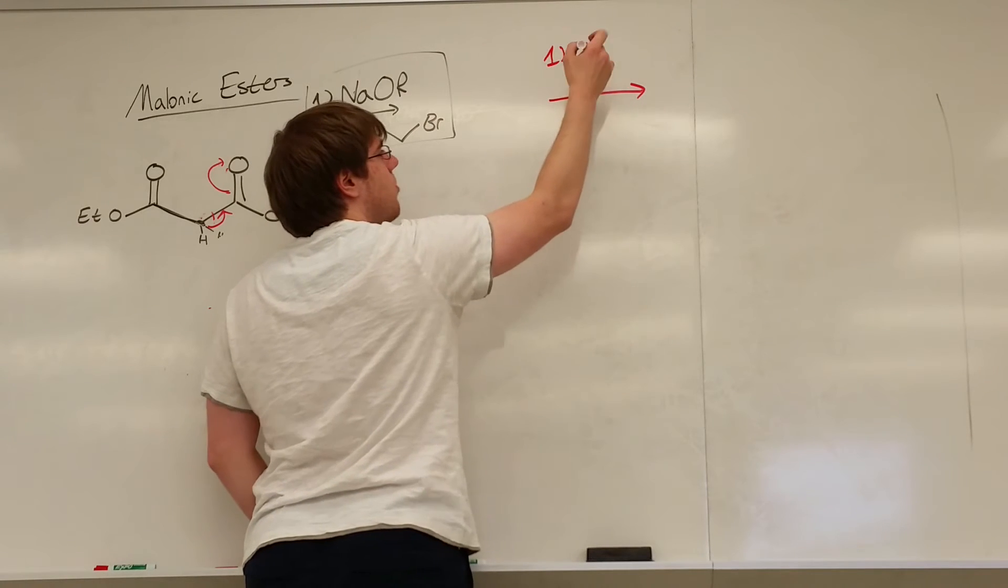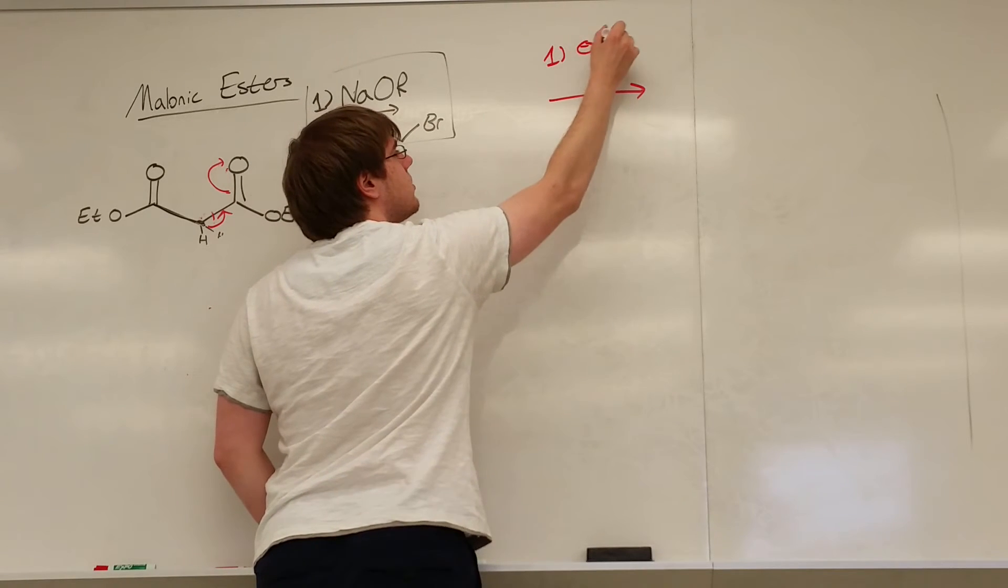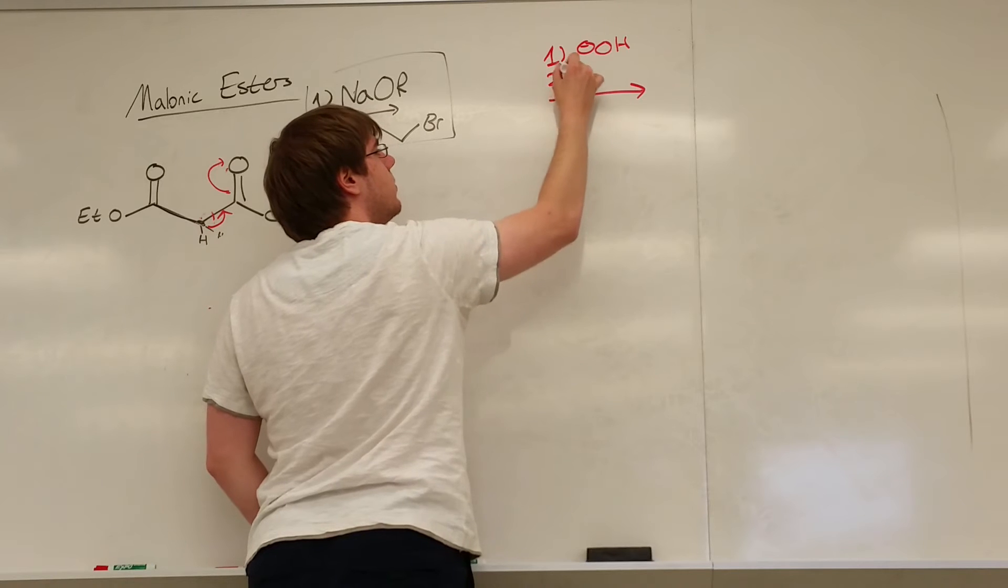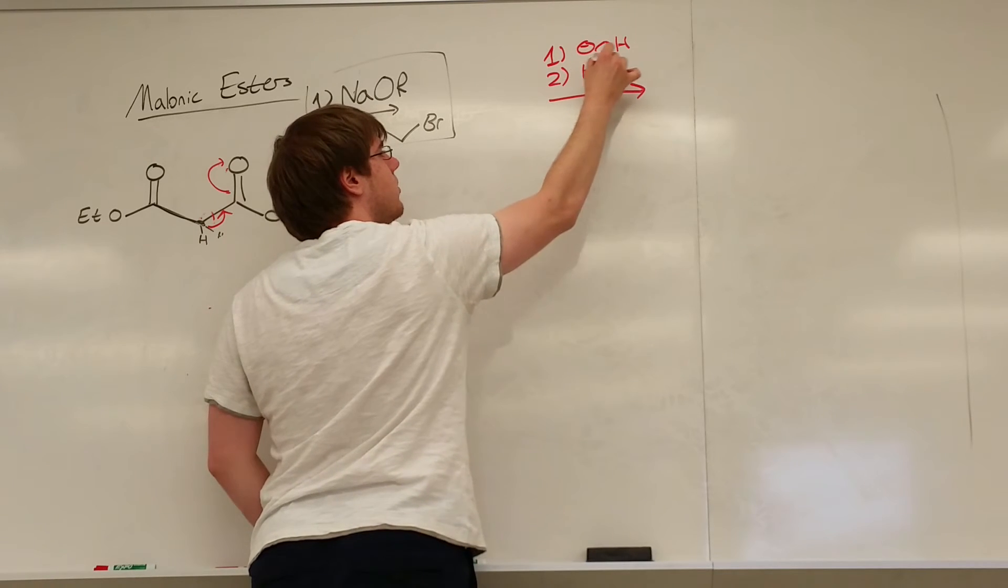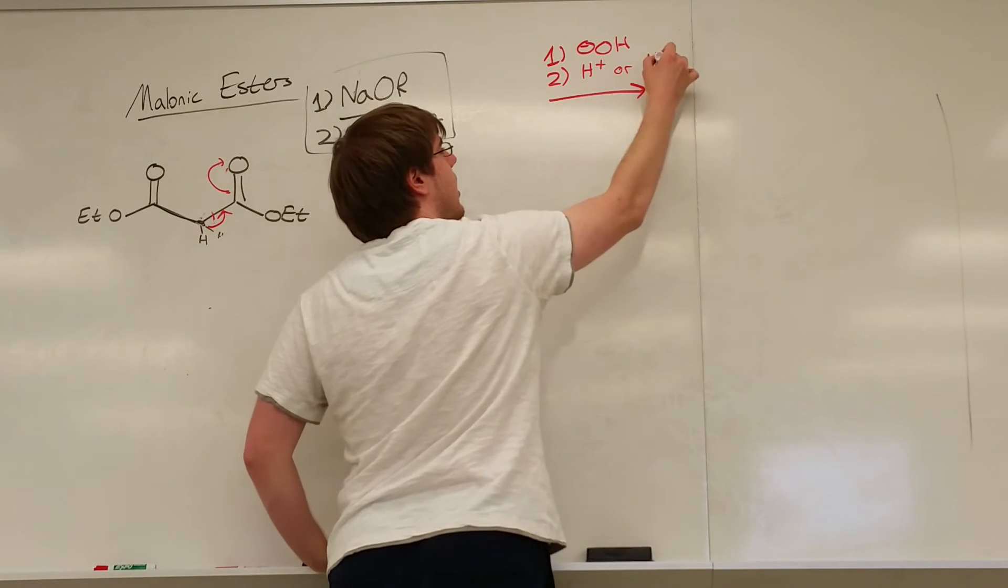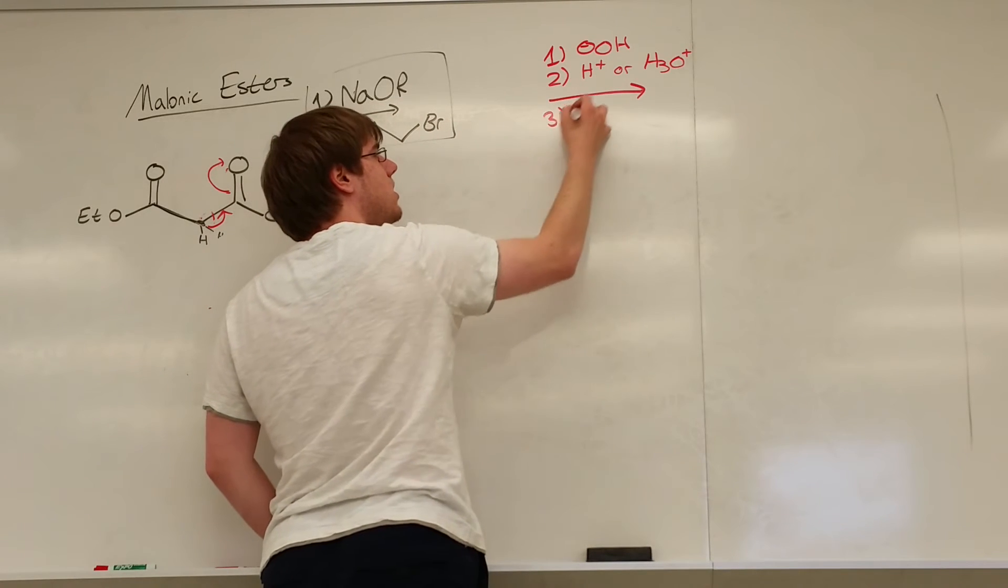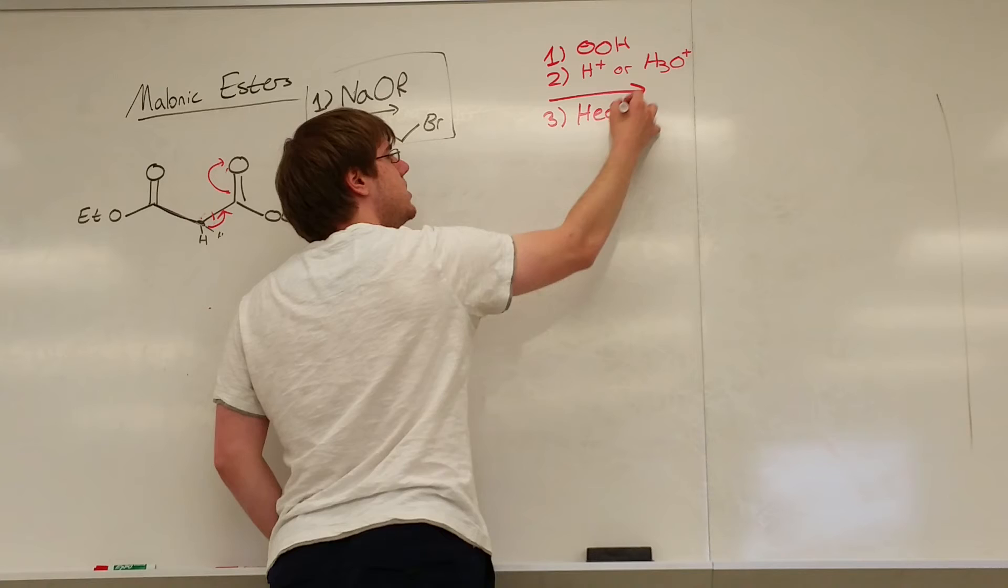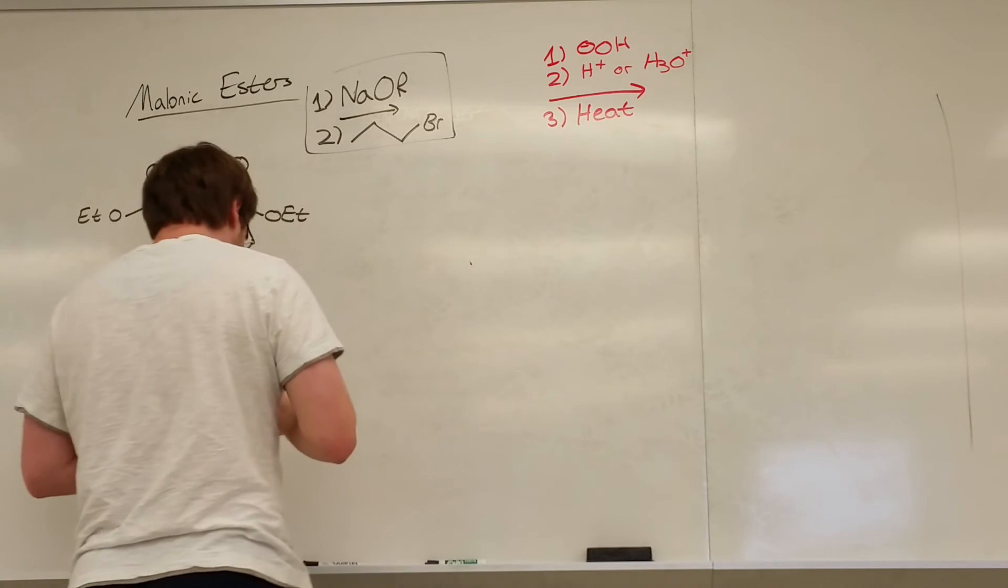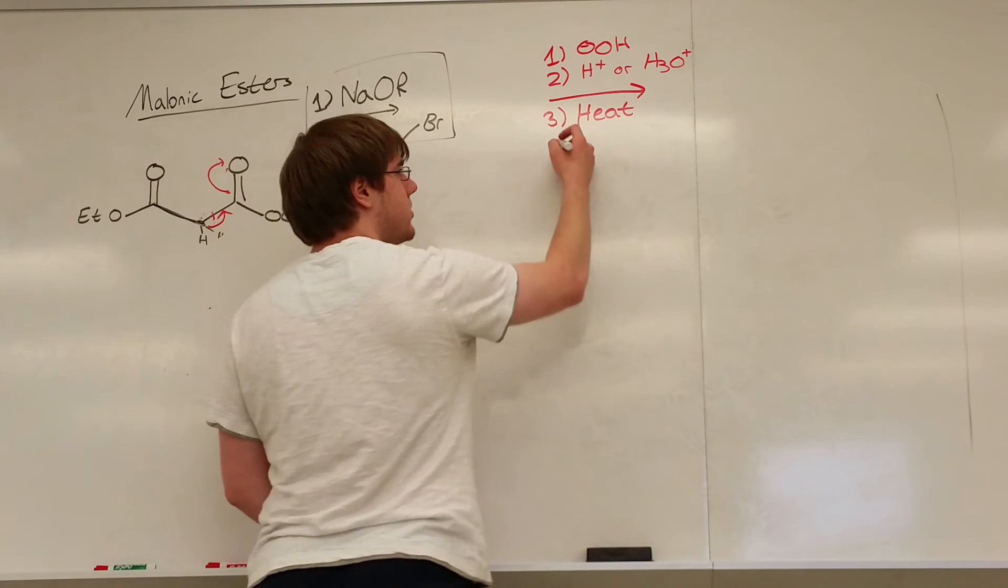So to further accentuate that this is involving malonic ester synthesis, usually there's another set of arrows, or set of steps that are on one arrow, or in order of each other. Like this: step one, OH-. Step two, H+, or H3O+. Either or, doesn't really matter. Step two, H3O+. And step three, heat. When you see these three together, what you should be thinking about is decarboxylation.